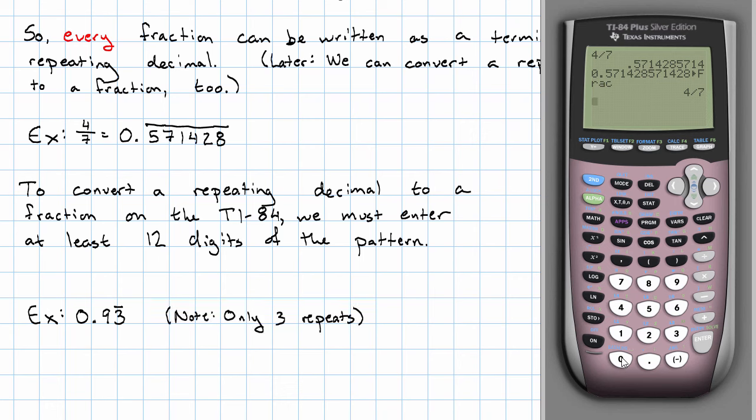So to enter that into the calculator, I say 0.9 and then 1, 2, 3, 4, 5, 6, 7, 8, 9, 10, 11, 12 copies of the number 3.